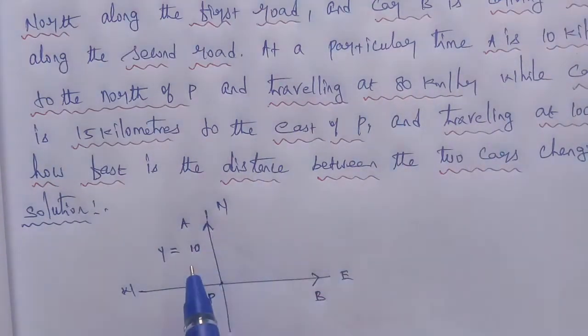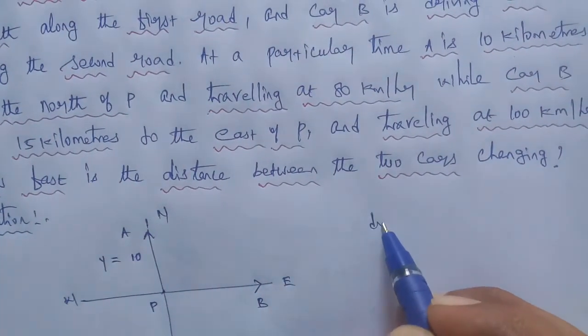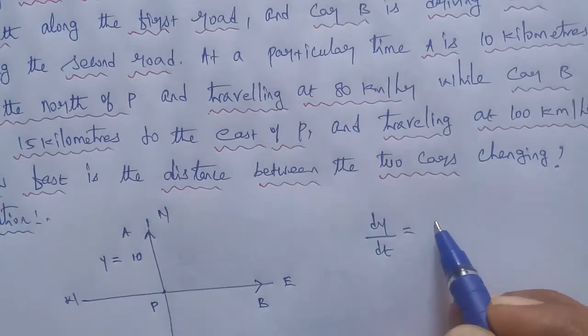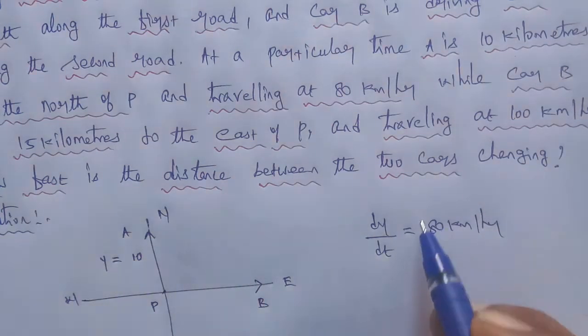Travelling at 80 km per hour. So the car per hour 80 km speed is increasing. Therefore, given information, dy by dt is equal to 80 km per hour.